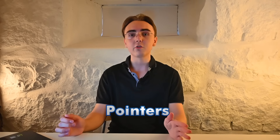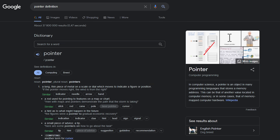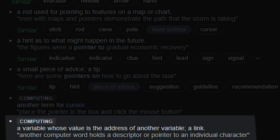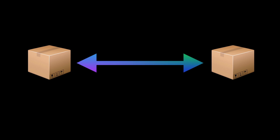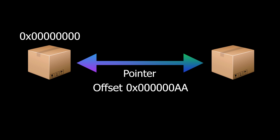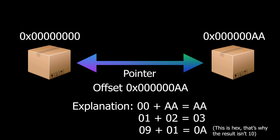Now that I know closing and reopening the game makes the previously found address useless, how can I avoid having to find the same address every time? That's where pointers come in. A pointer is a variable that stores the address of another variable. Pointers can be used to calculate an address using something called offsets — an offset is basically the distance between two memory addresses. So for example, if you have a pointer where the base address is all zeros and add an offset of AA to it, you would end up with a pointer to a new address.